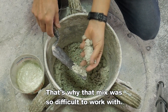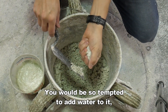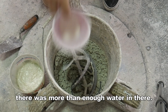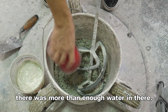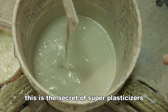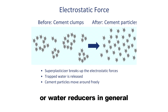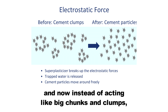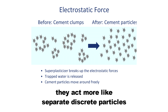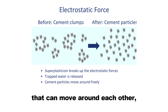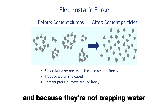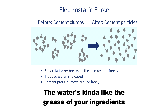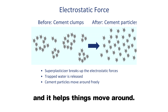That's why that mix seems so dry. That's why that mix was so difficult to work with — you would be so tempted to add water to it. But obviously, just by adding some powder, there was more than enough water in there. This is the secret of superplasticizers, or water reducers in general: they free up that trapped water. They break up those cement particles, and now instead of acting like big clumps, they act more like separate, discrete particles that can move around each other. Because they're not trapping water, there's more lubrication. The water is like the grease of your ingredients — it helps things move around.